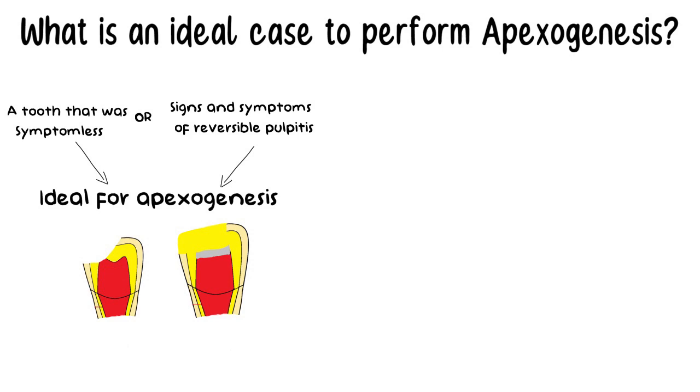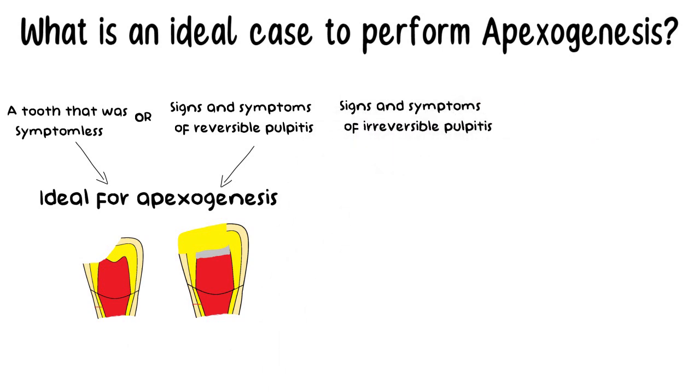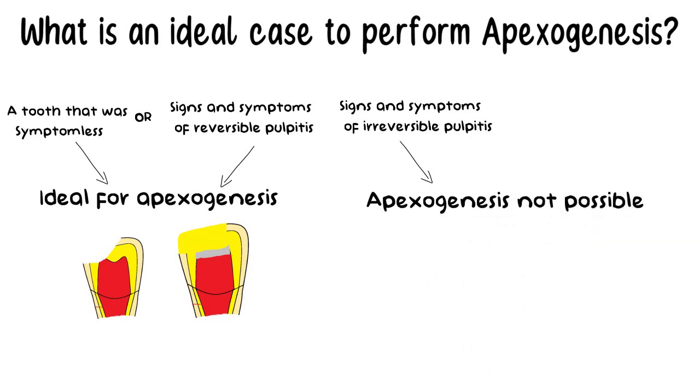But if the tooth prior to exposure had signs and symptoms of irreversible pulpitis, which is mostly the case when the pulp exposure has been caused by caries, then attempting Apexogenesis in these cases is useless since the pulp will eventually go into necrotic state regardless of whether the irritants are removed or not.